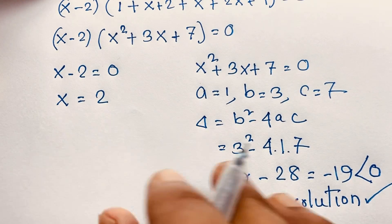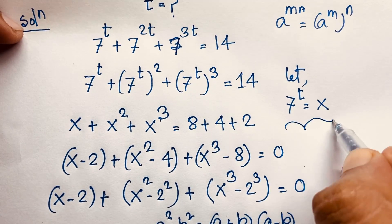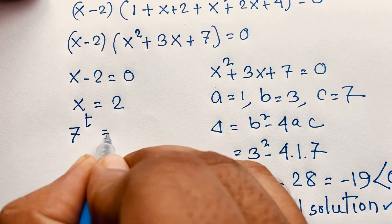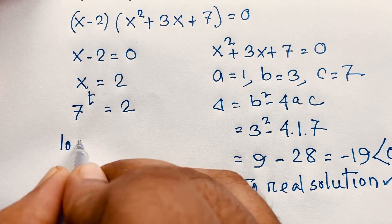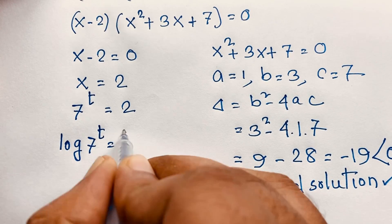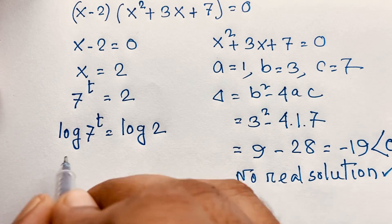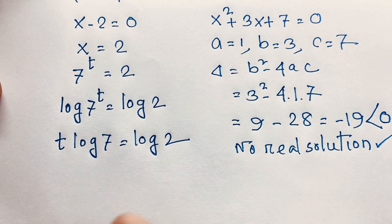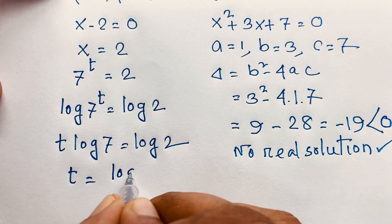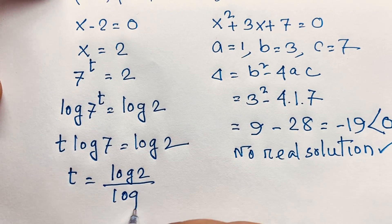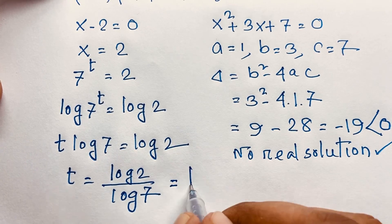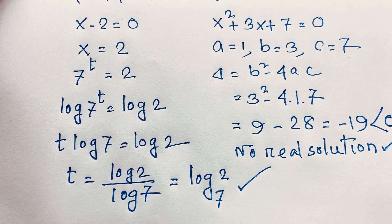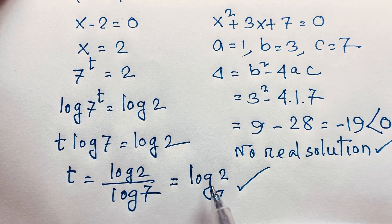Recalling that x equals 7 to the power t, and from Case 1 x equals 2, we have 7 to the power t equals 2. Taking the natural log of both sides: t times log 7 equals log 2. Dividing both sides by log 7 gives t equals log 2 over log 7, which equals log base 7 of 2. This is our final answer.